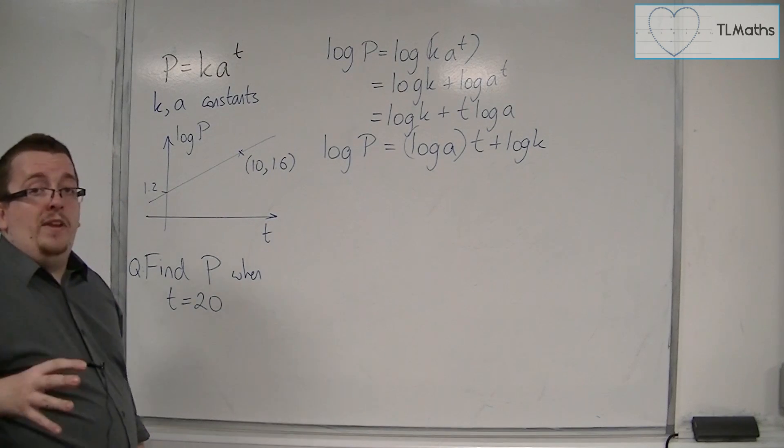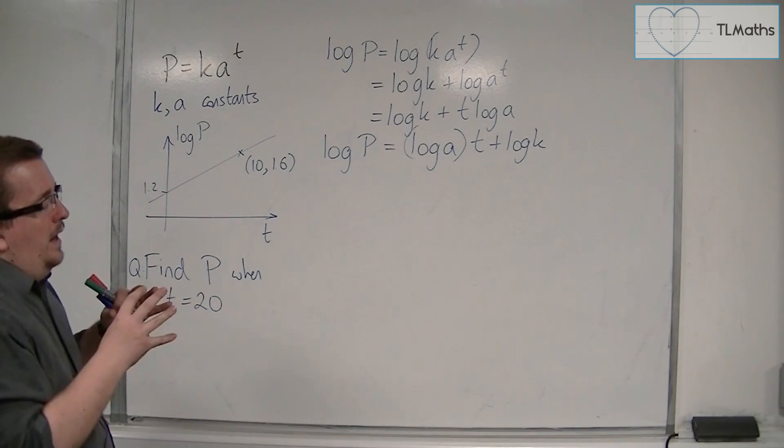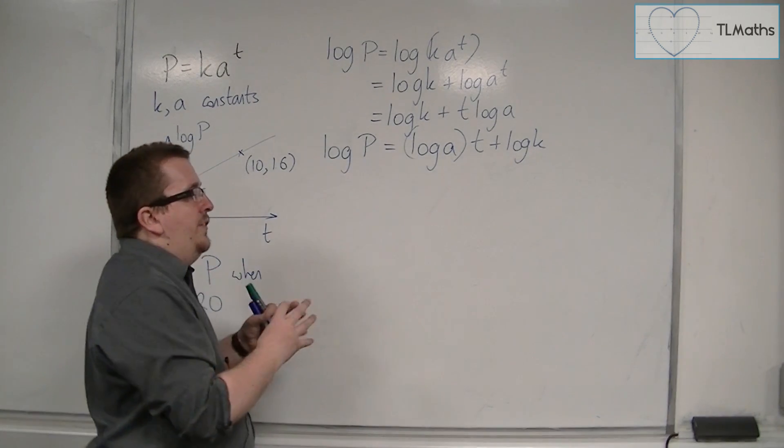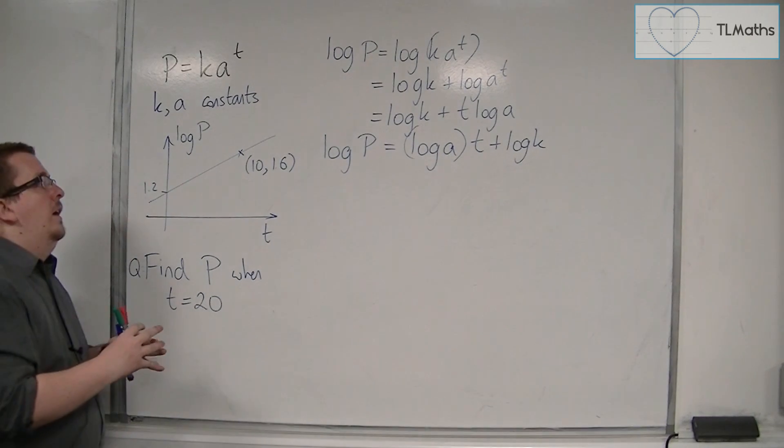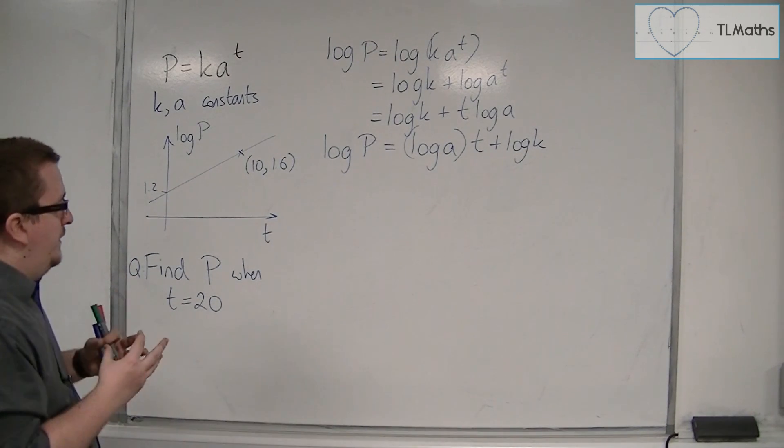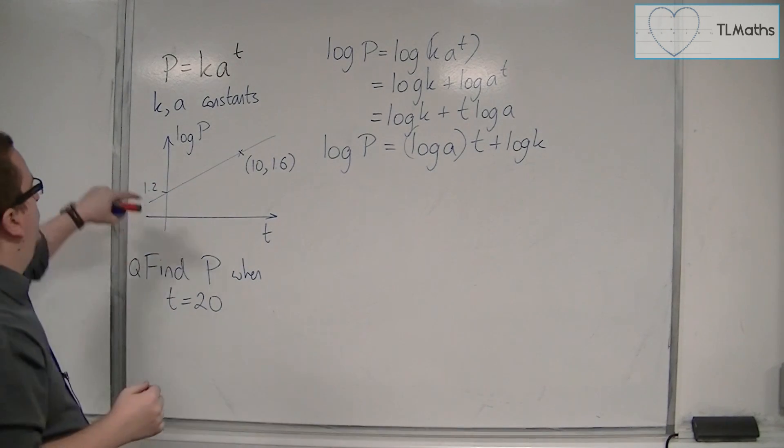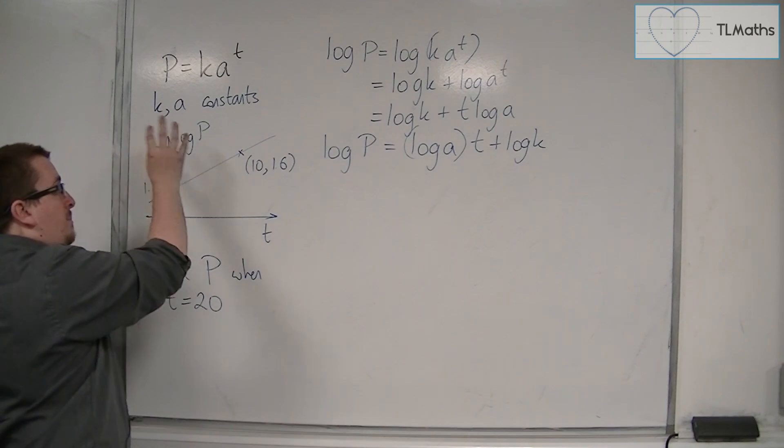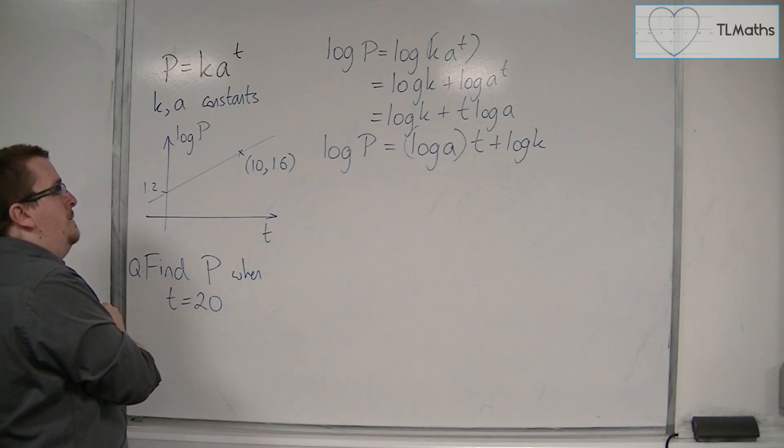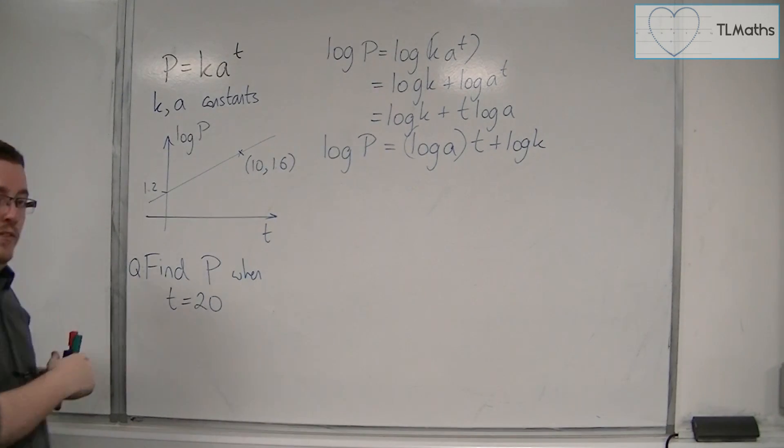Now, let's say then, now that it's in that format, I plot the points, and they look like a nice straight line, and it goes through 1.2 on the log P axis, and 10, 1.6.